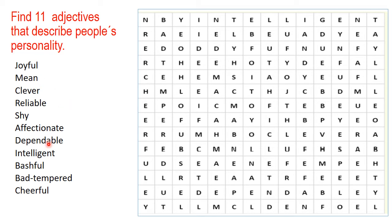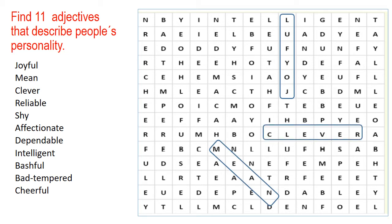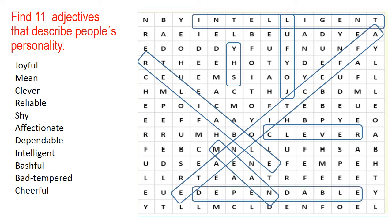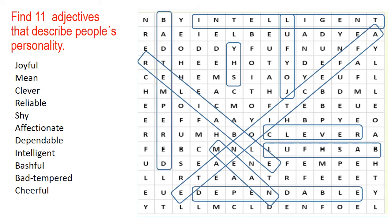Are you ready? Well, let's check. The first one is joyful. Then we have mean. Clever. Reliable. Shy. Affectionate. Dependable. Intelligent. Bashful. Bad-tempered. Cheerful.